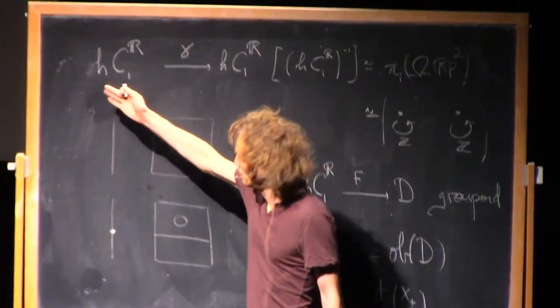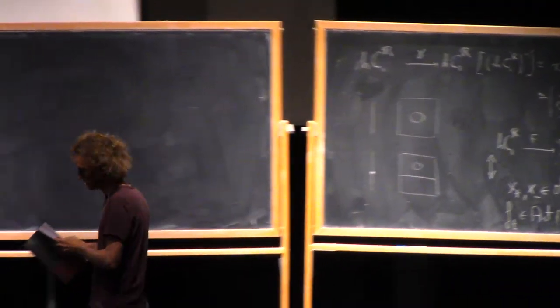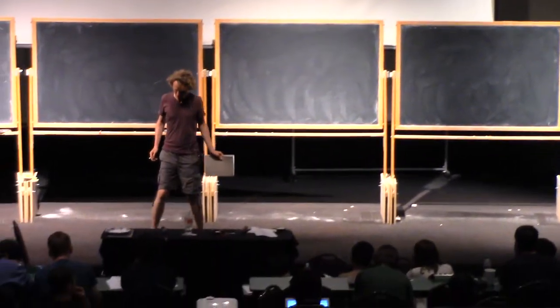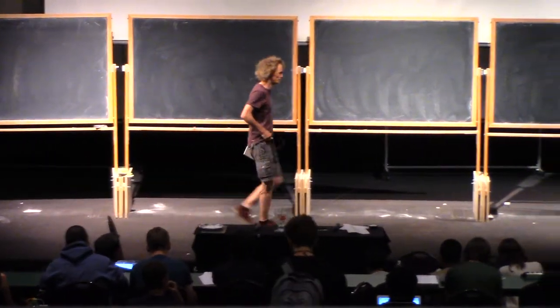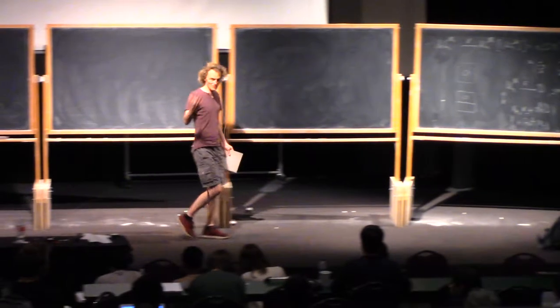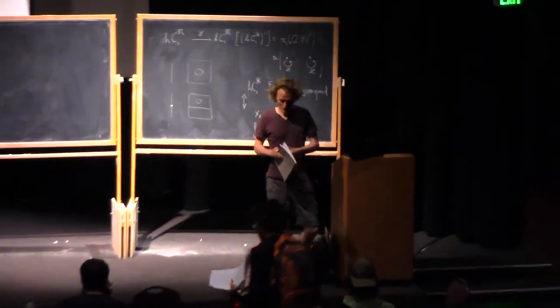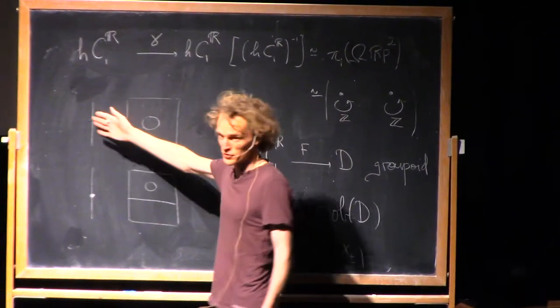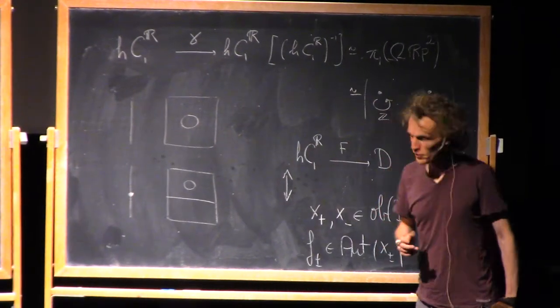Yesterday I talked about this example and the main theorem that classifies for all these cobordism categories. It classifies functions from them into group points, or more precisely, it translates that question to a homotopy theoretic question, which a priori is often easier. I mentioned this example: finite subsets of R and one dimensional cobordisms in R across an interval.